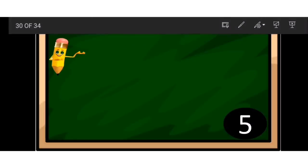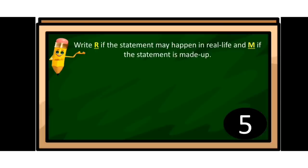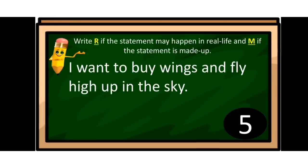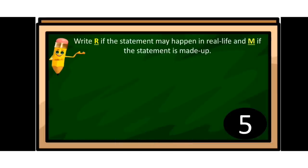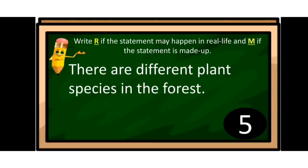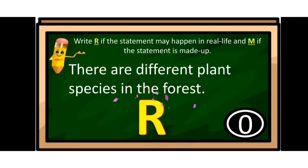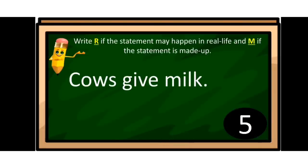All right, next activity. Write R if the statement may happen in real life and M if the statement is made-up. First one: 'I want to buy wings and fly high up in the sky.' The answer is M — it is made-up. Next: 'There are different plant species in the forest.' The answer is R. Next: 'Cows give milk.' The answer is R — it happens in real life.